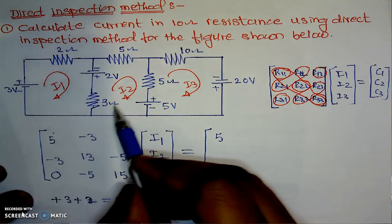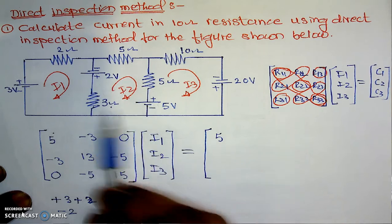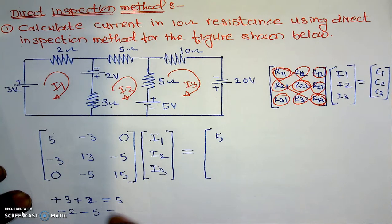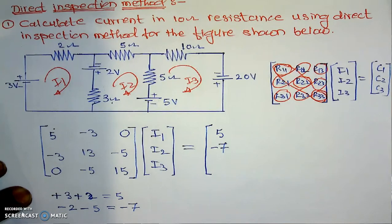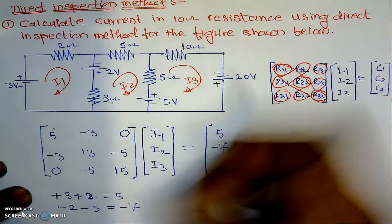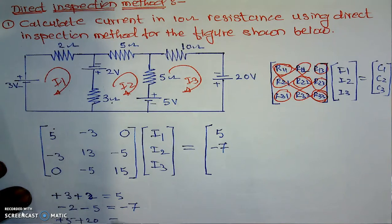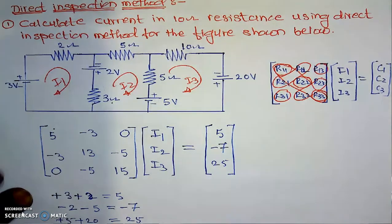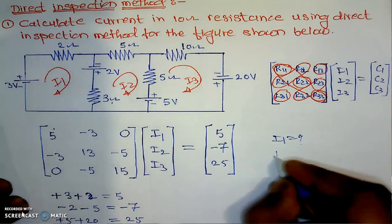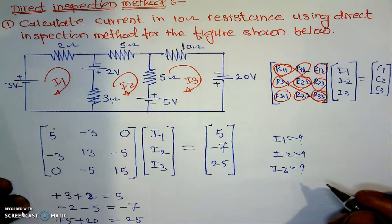Similarly for loop number 2, travelling with the direction of the current from positive to negative gives minus 2; then positive to negative again gives minus 5, so C2 equals minus 7. Finally for the third constant: travelling in the third loop from negative to positive gives plus 5, then again negative to positive gives plus 20, so C3 equals 25. By solving these three equations simultaneously we can find I1, I2, and I3 — or directly using a calculator by substituting these values.